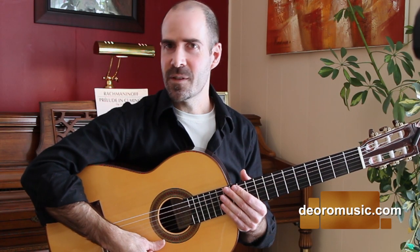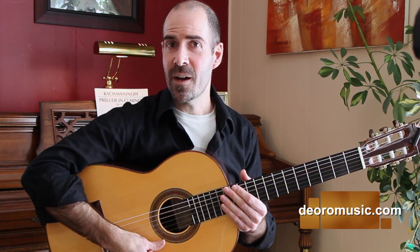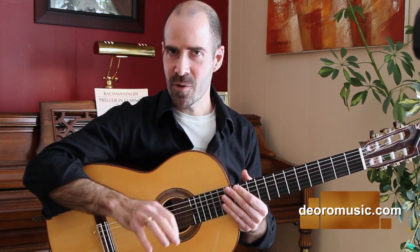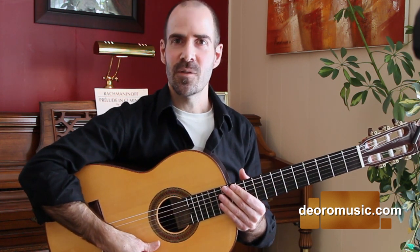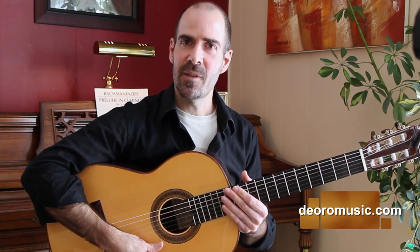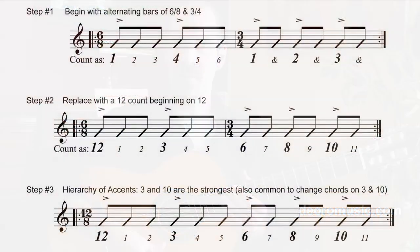Now what we'll do is give the accents a hierarchy, and this will start to give it more of the authentic feel. So what we've seen so far, we have the accents on 12, 3, 6, 8, 10. Now we're going to put the strongest accents on 3 and 10. So that gives us: 12, 1, 2, 3, 4, 5, 6, 7, 8, 9, 10.